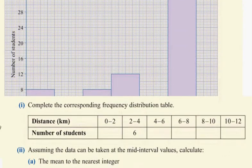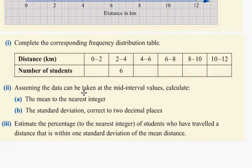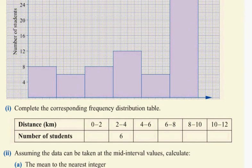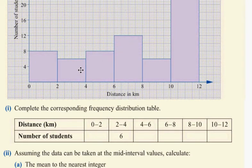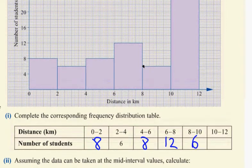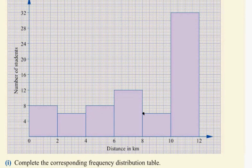Now question four. The histogram values: zero to two is eight people, two to four is six, four to six is eight, six to eight is twelve, eight to ten is six, and ten to twelve is thirty-two.